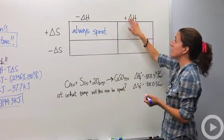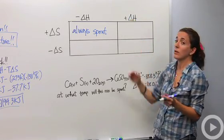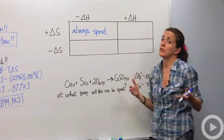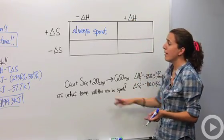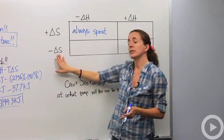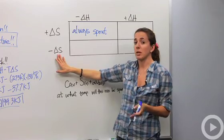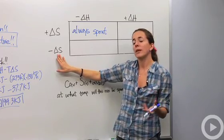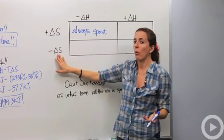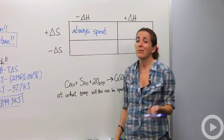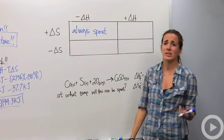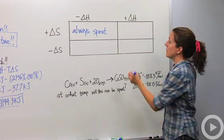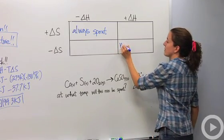If we have a positive delta H — meaning we required energy for the reaction — and we decrease our entropy, meaning things became more orderly, we don't like that combination. No matter what the temperature is, it is never spontaneous.